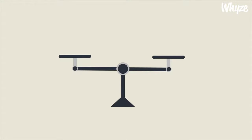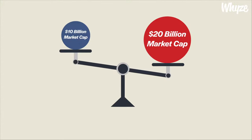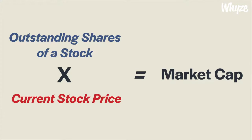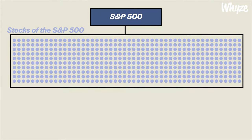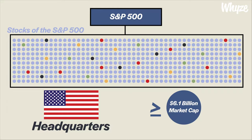The S&P 500 includes popular stocks like Apple, Microsoft, Amazon, Johnson & Johnson, and Facebook. As a market capitalization-weighted index, companies with higher market capitalizations weigh more heavily on the index. For example, a price change in a stock with a $20 billion market cap will affect the value of the S&P 500 more than an equal price change in a stock with a $10 billion market cap. To calculate the market capitalization of a stock, you simply multiply the outstanding shares by the current share price, though this is usually provided for you. The S&P 500 has specific criteria companies must meet to remain in the group, including being headquartered in the U.S. and having a market capitalization of at least $6.1 billion.